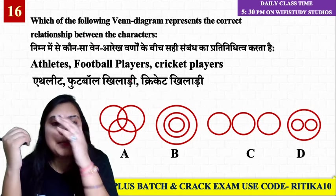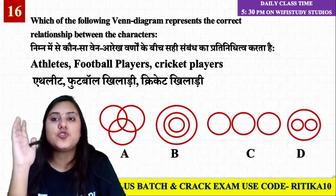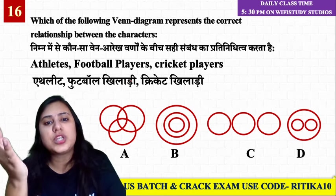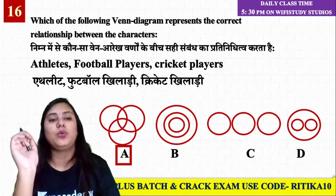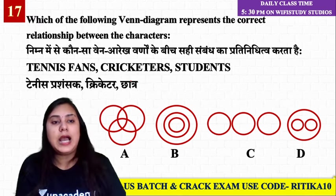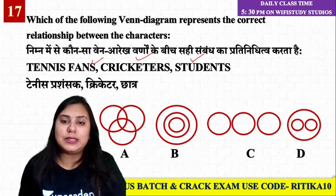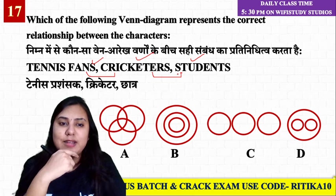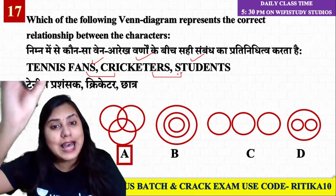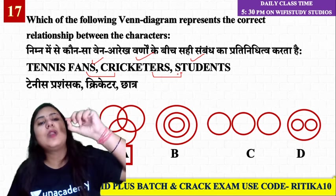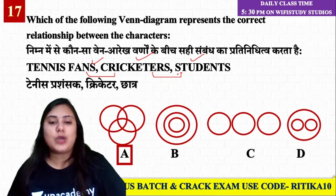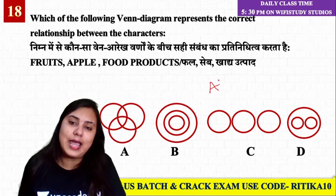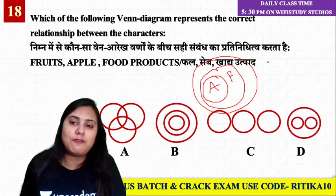Athletes, Football players, and Cricket players — athletes are sports persons. Some athletes can be football players, and some football players can also be cricket players. For Tennis fans, Cricketers, and Students — they could each partially overlap. All students can be cricketers, so there is a partial relation. All apples come under fruits and under food products, so the diagram reflects this layered relationship.